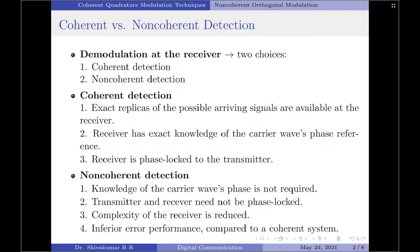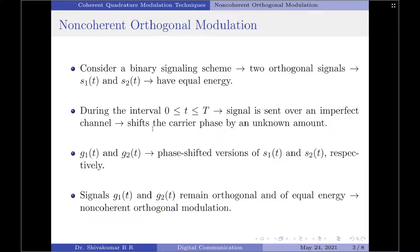Since phase knowledge is not required, the transmitter and receiver need not be phase locked. This causes the complexity of the receiver to be reduced. However, this reduction in complexity is achieved at the expense of inferior error performance compared to coherent systems. Let us now move on to non-coherent orthogonal modulation.